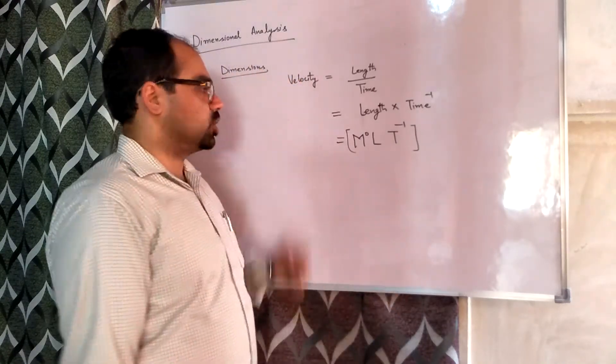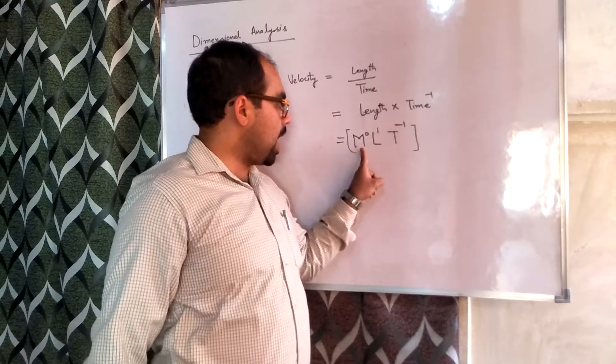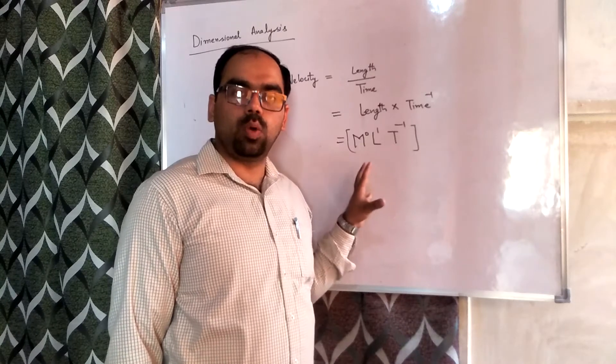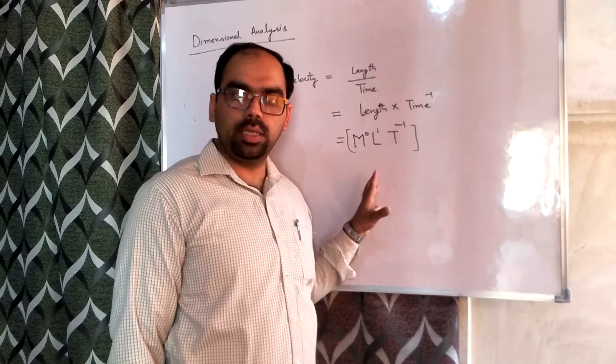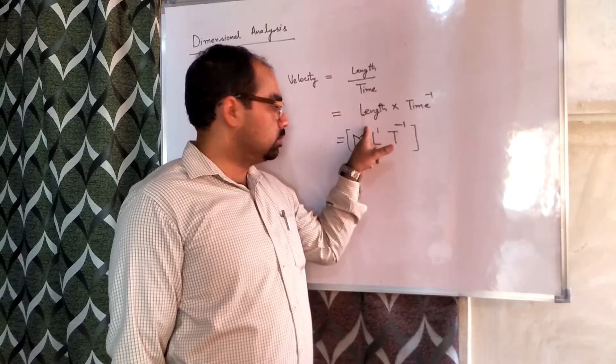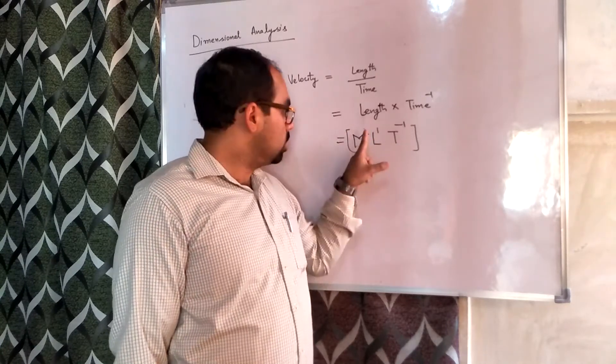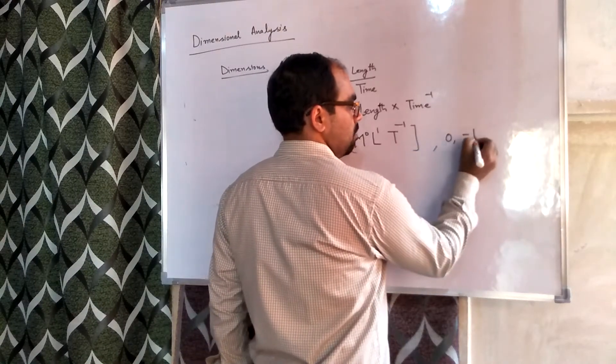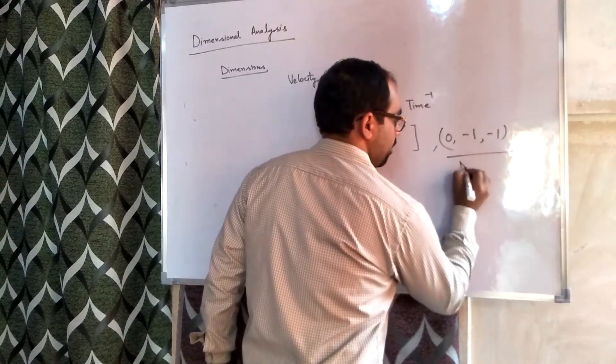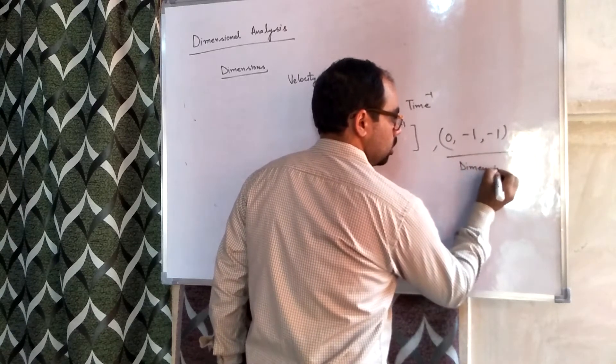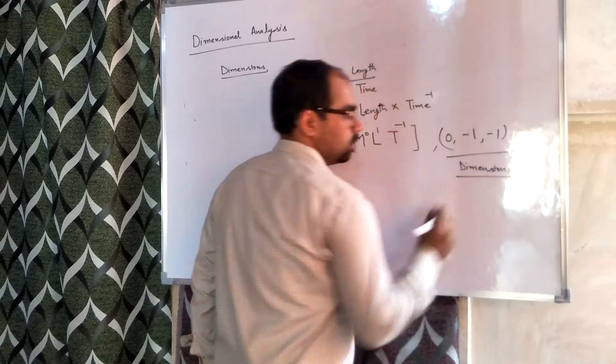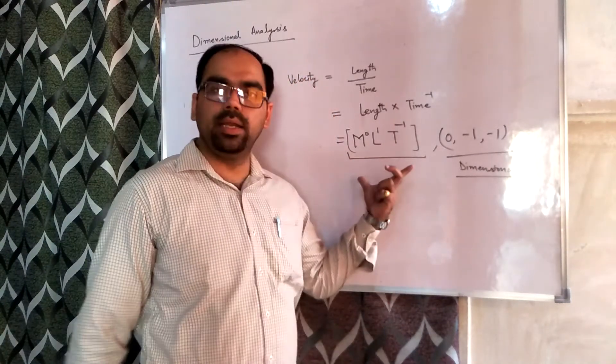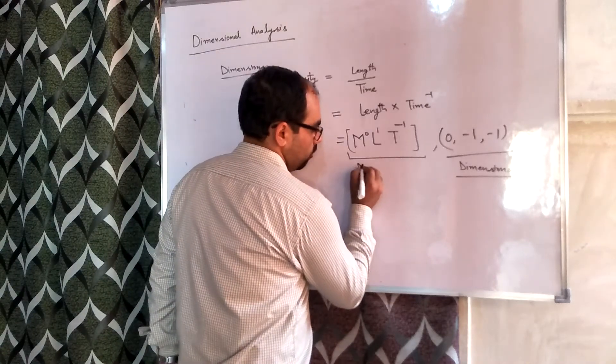Now come to the topic, that is dimensions. The powers as MLT - they are principal physical quantities, fundamental physical quantities. So the powers which are being raised to them: 0, 1, minus 1 - they are the dimensions. The whole term which is represented in square brackets is a dimensional formula.